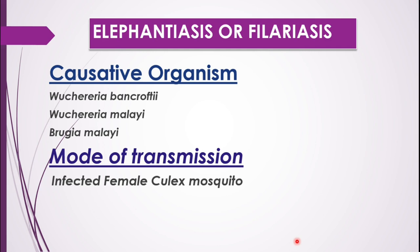The next disease caused by worms is Elephantiasis or Filariasis. The causative organisms are Wuchereria bancrofti or Wuchereria malayi, both falling under the same genus Wuchereria. There is also another genus involved. In all these cases, the common name for the causative organism is filarial worm.